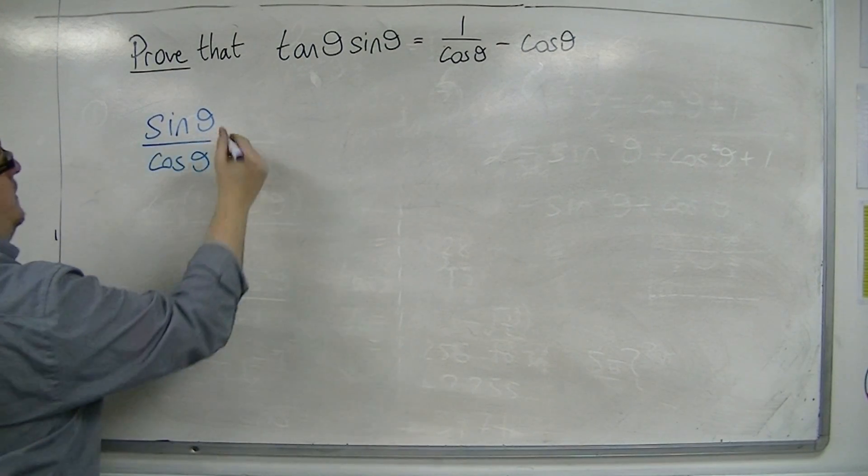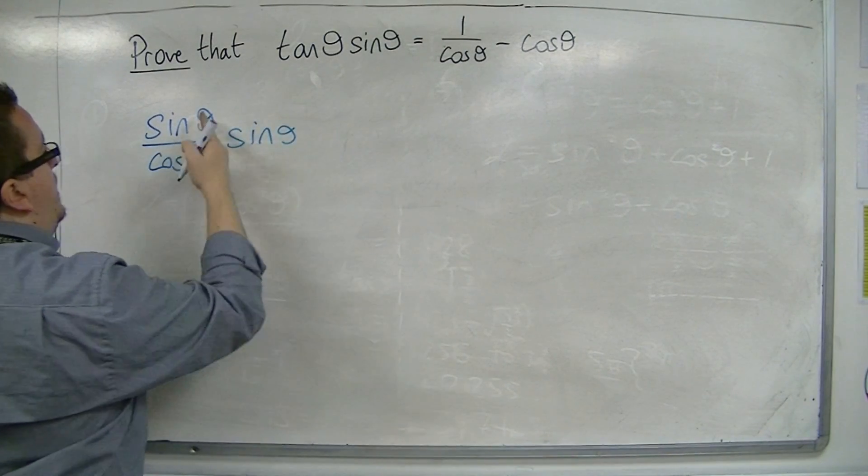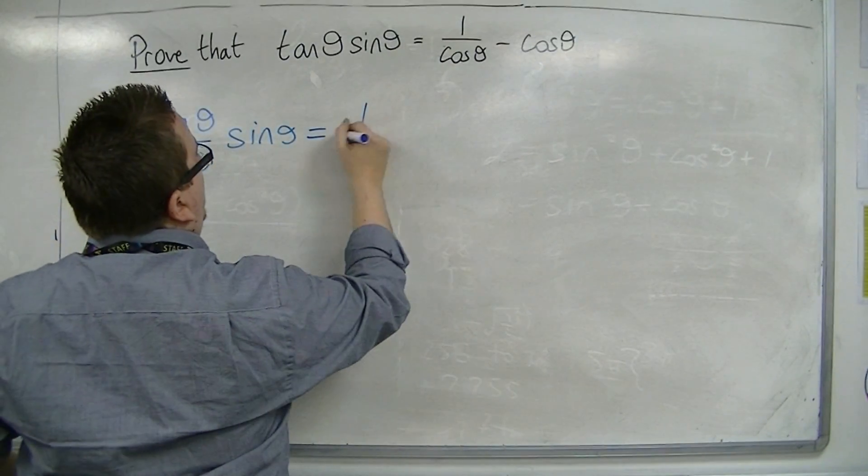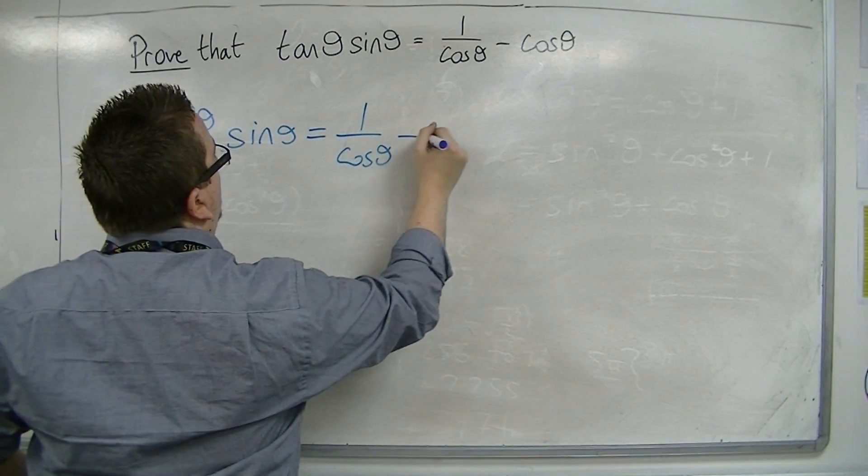So I've got sin over cos times sin is the same as 1 over cos minus cos.